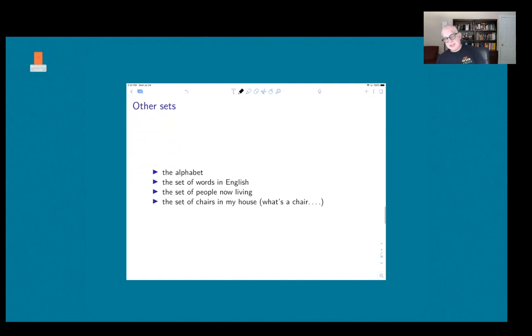Just to give you some examples of sets that aren't numeric. The alphabet is the set of, at least the English alphabet, A, B, C, D, and so forth. The set of English words. The set of people now living is an example of a set. And the set of chairs in my house is an example of a set.